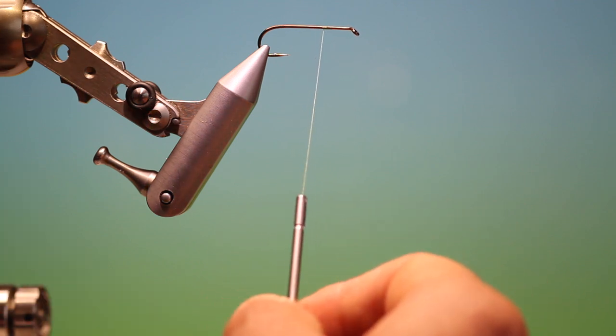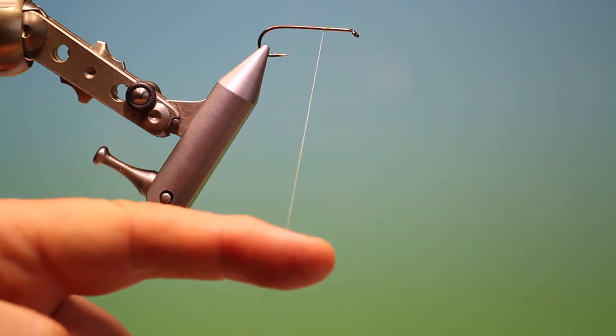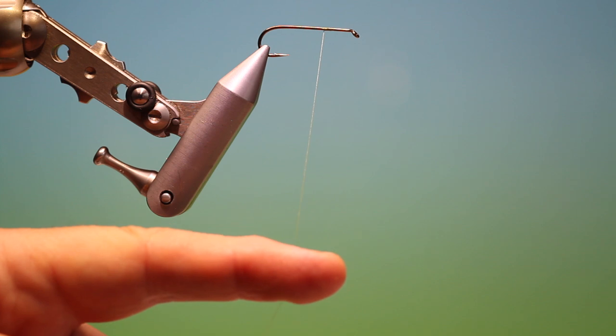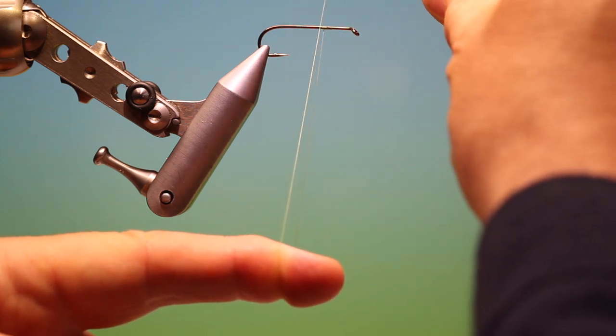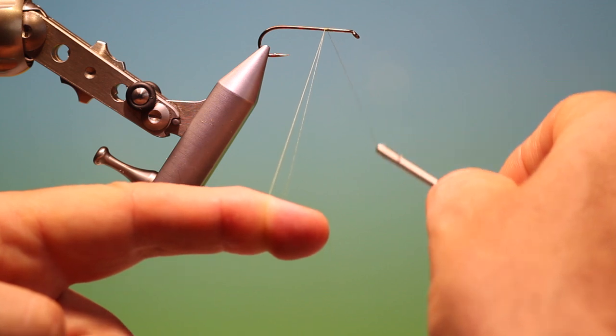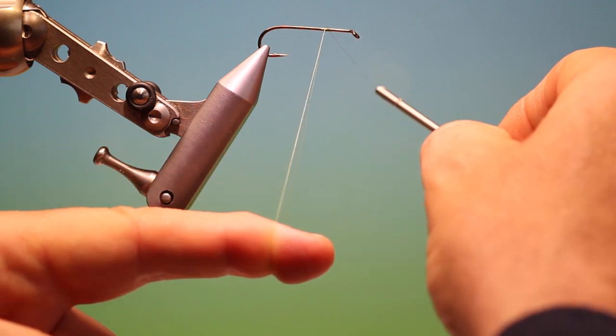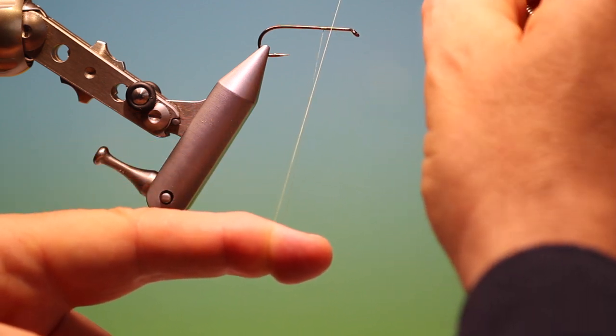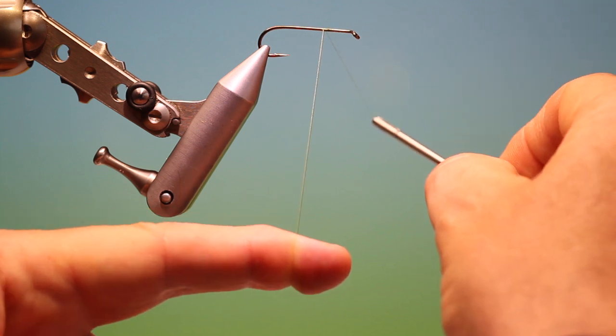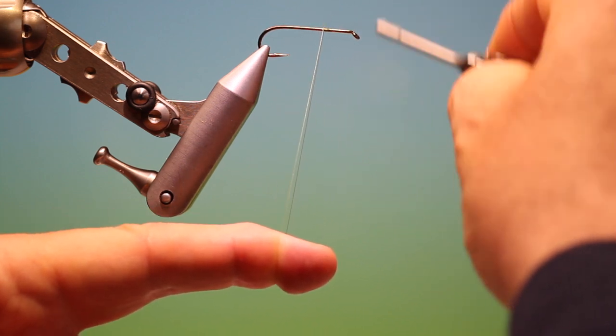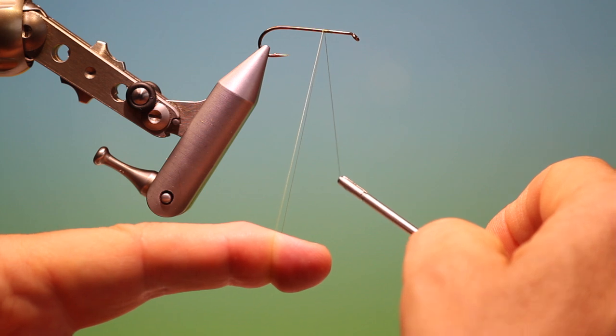Otherwise you'll be winding and winding. We put our finger on and loop this over the hook shank. You can determine by pulling on your bobbin or your finger how large the dubbing loop will be. Once we've decided on the size, we can lock that off with two turns around the hook shank.